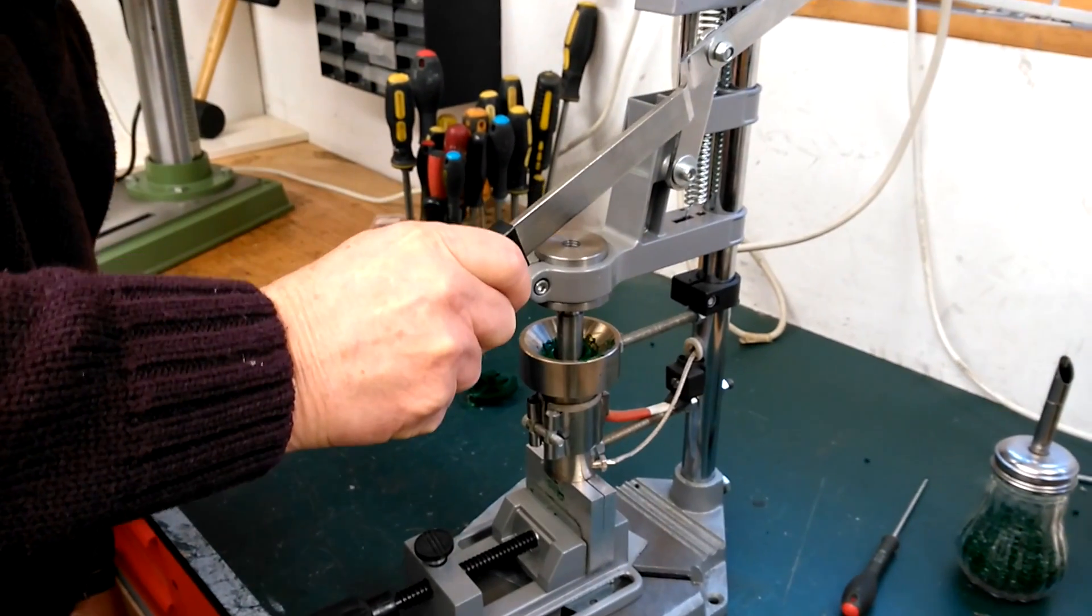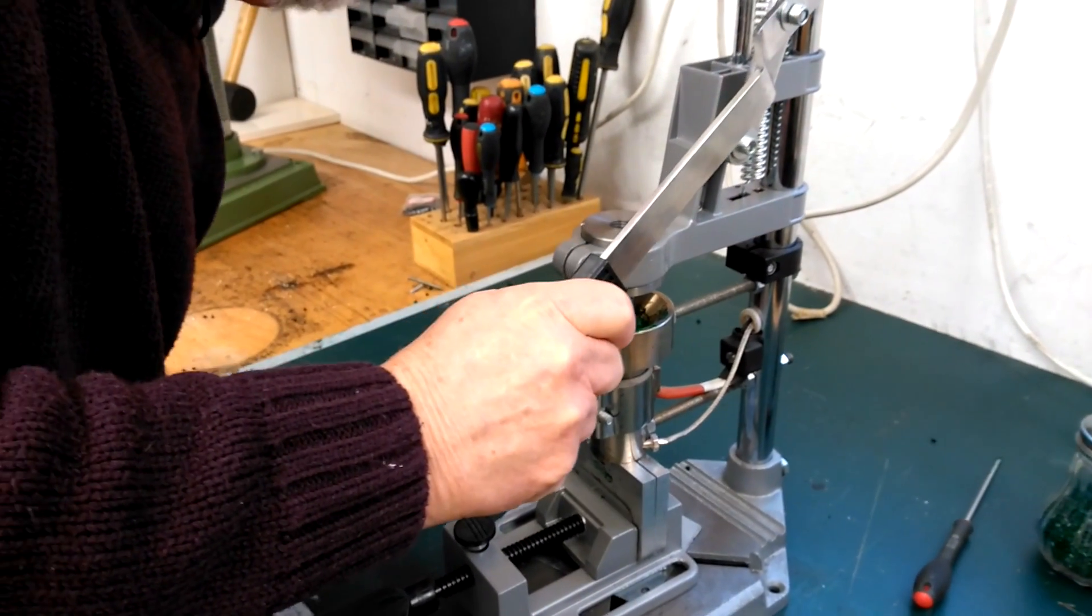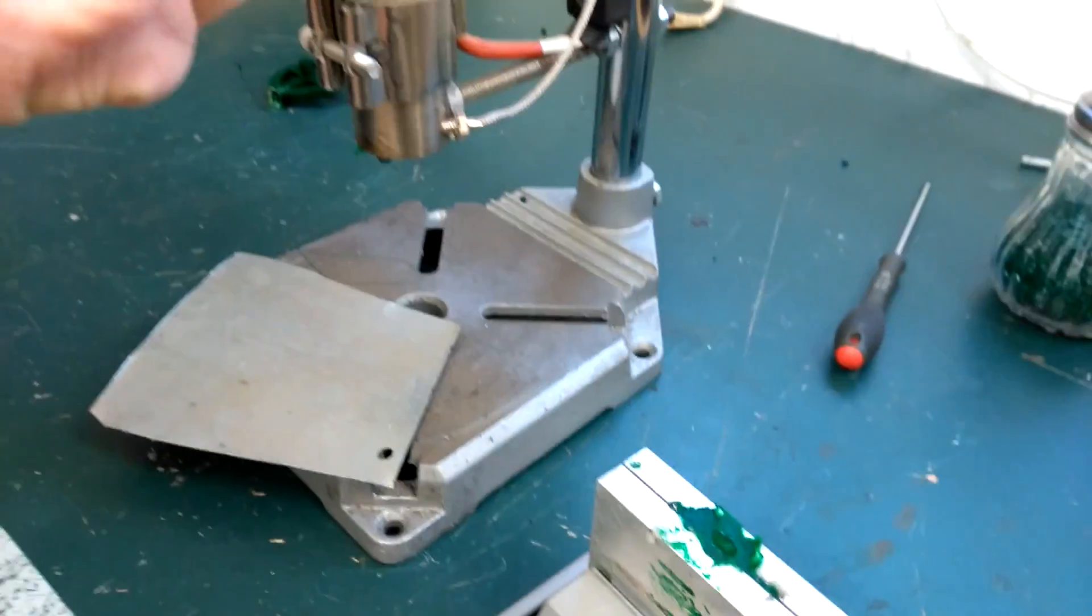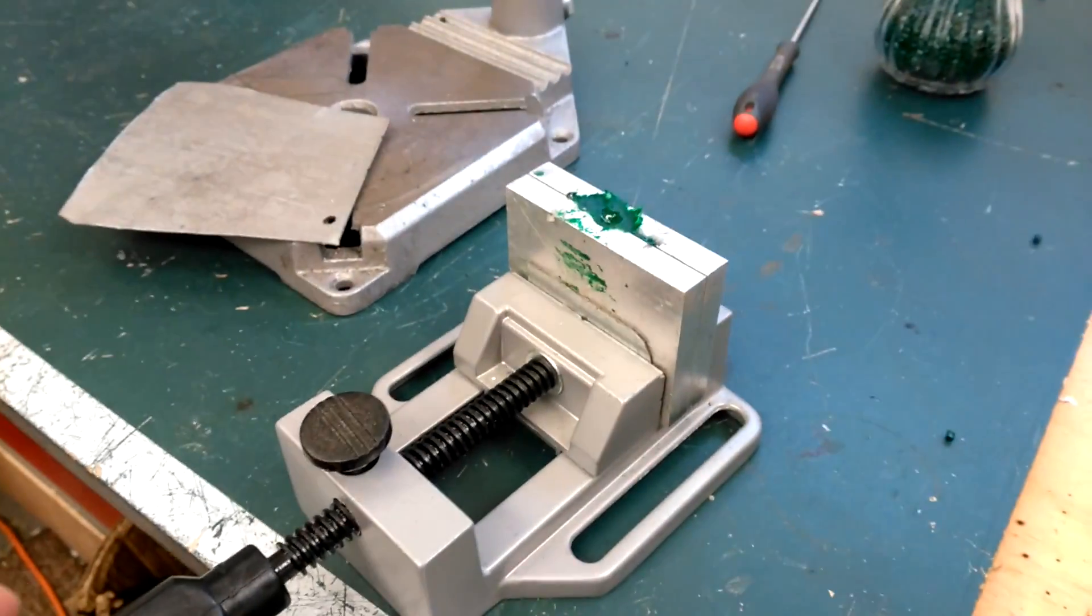Then pull down very smartly on the plunger and inject the plastic into the part. Then pull the vise from the machine. Take the mold out of the vise.